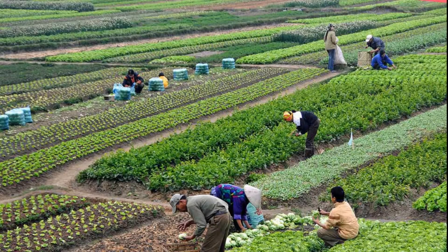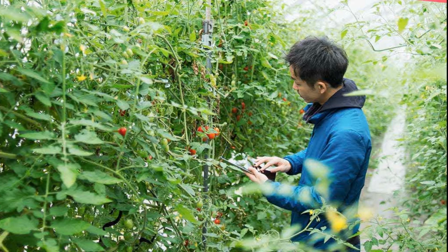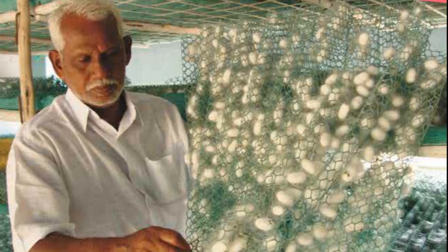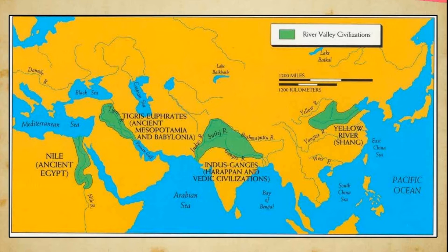Agriculture. The term agriculture is derived from Latin words 'ager', meaning piece of land, and 'cultura', meaning ploughing or tilling. The term agriculture, however, is not restricted to growing of crops; rather it includes rearing of animals also. Some scholars include animal husbandry, forestry, horticulture, fishing, sericulture and poultry also in agriculture. Agriculture is one of the oldest activities of mankind.